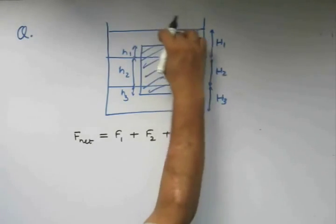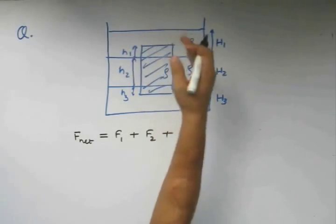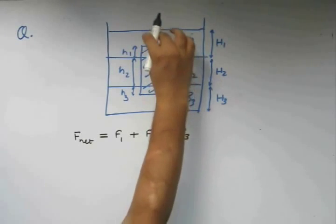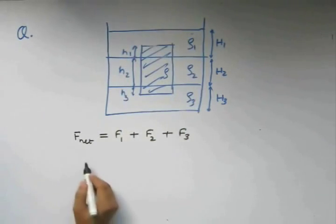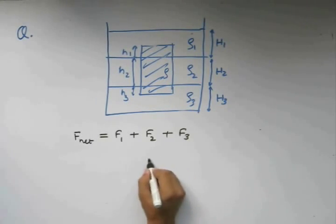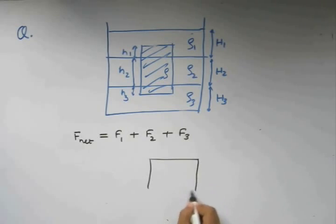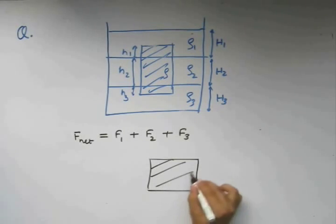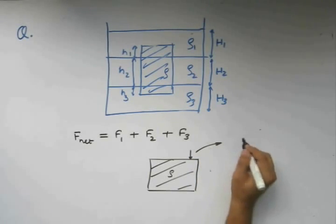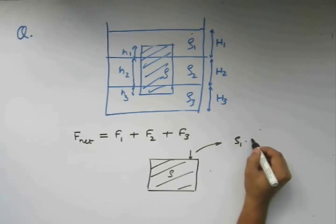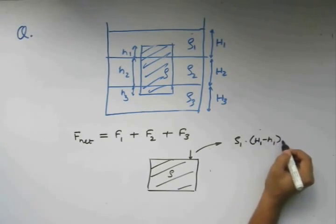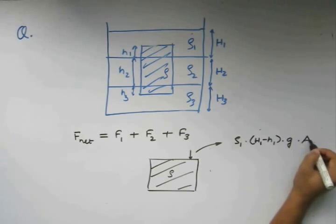If we consider this top part, the force acting along this downward direction due to this height of the fluid is going to be, let us say we draw this separately. This is the body of rho. This force is going to be rho1 into H1 minus h1 times G times the cross sectional area.